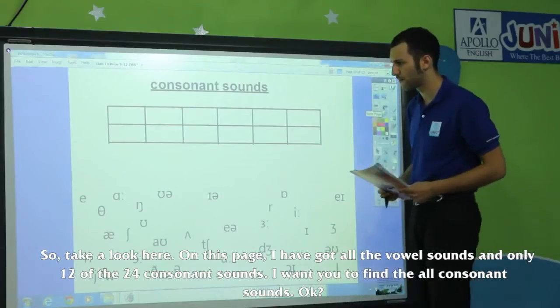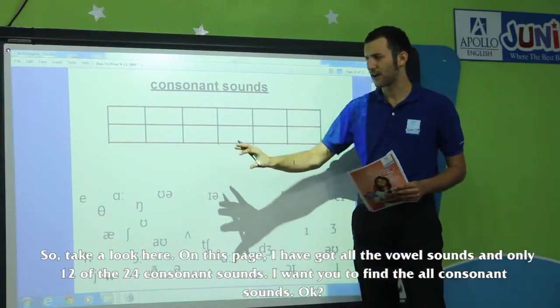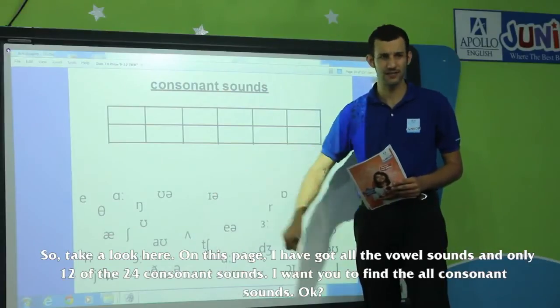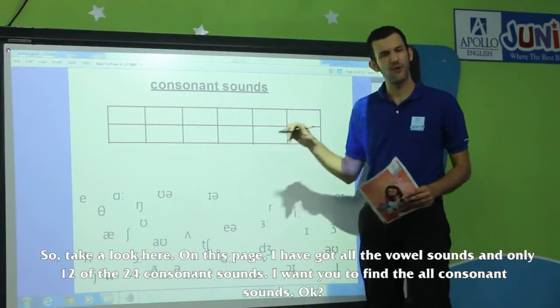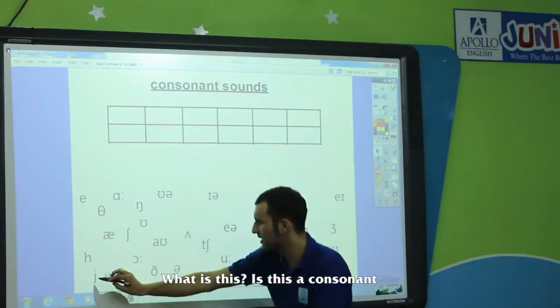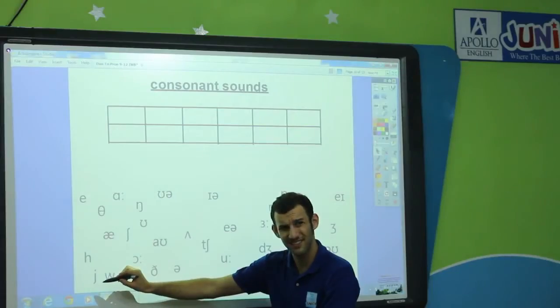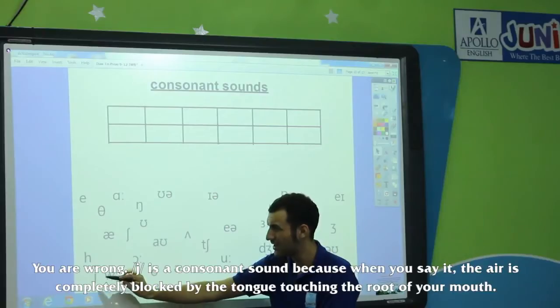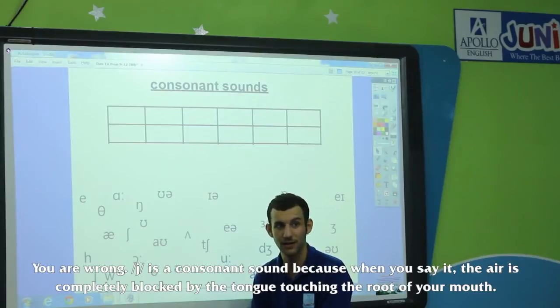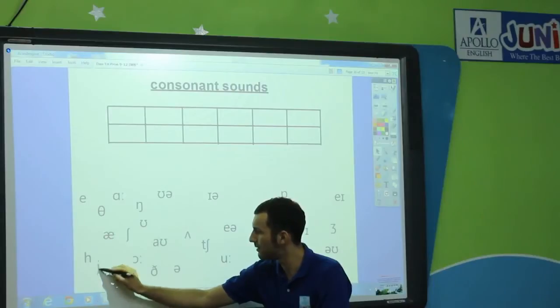So, take a look here. On this page, I've got all the vowel sounds and only twelve of the twenty-four consonant sounds. I want you to help me find the consonant sounds. Look at this — Y. Is it a consonant sound? No. You're wrong. Y is a consonant sound because when you say it, the air is almost completely blocked by your tongue touching the roof of your mouth. Y.